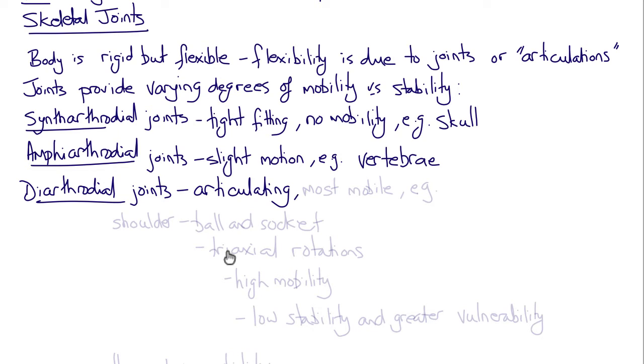And then there are diarthrodial joints that are the articulating joints that have the most mobility and include the shoulder joint, which is a ball and socket joint allowing tri-axial rotations and high mobility, but therefore suffer from lower stability and greater vulnerability to injury.